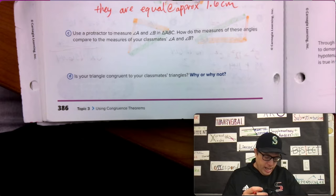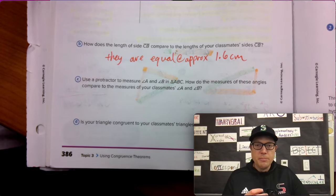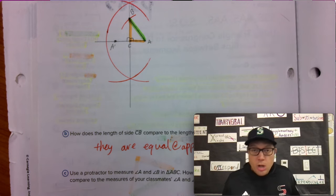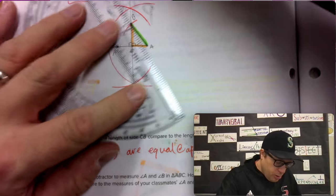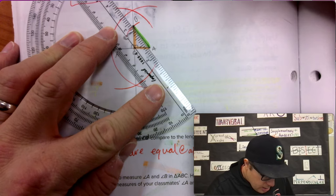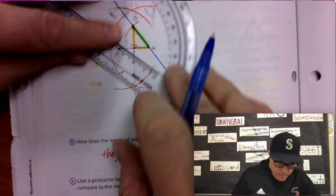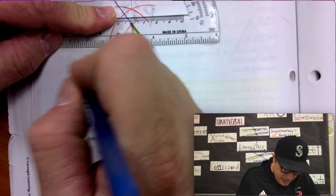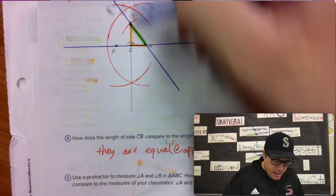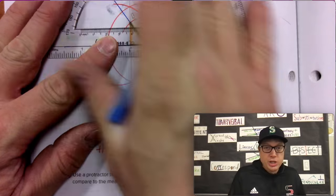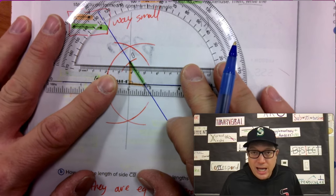Use a protractor to measure angle A and angle B in the triangle ABC. How do the measure of these angles compare to the measures of your classmates? So first of all, they're going to be equal because the way you created it, we're creating things equally. But in order to use the protractor, we're going to have to make the lines longer. So I'm going to make the hypotenuse extend out. I'm going to make the leg CA extend out. And I'm going to make the leg, it's already extended, but I got this leg right here that's extended out. Now I can actually use my giant protractor to measure angle A. Pro tip, you don't have to measure angle C. It's 90 degrees.